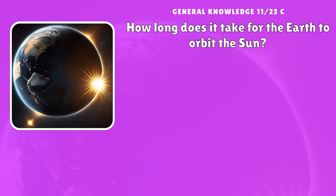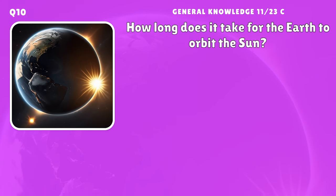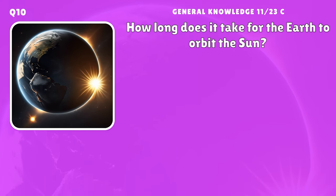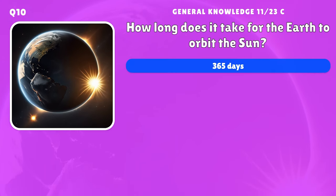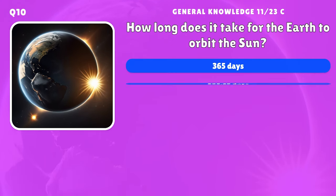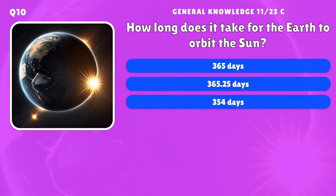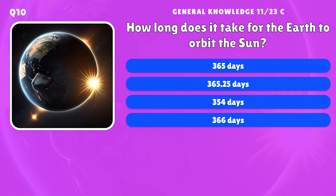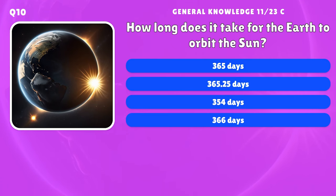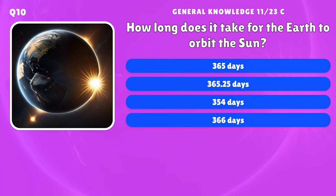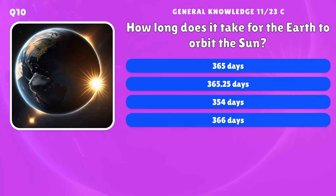How long does it take for the Earth to orbit the Sun? A) 365 days, B) 365.25 days, C) 354 days, D) 366 days.